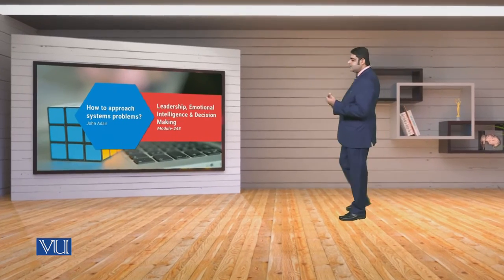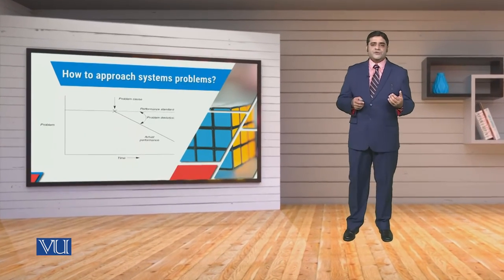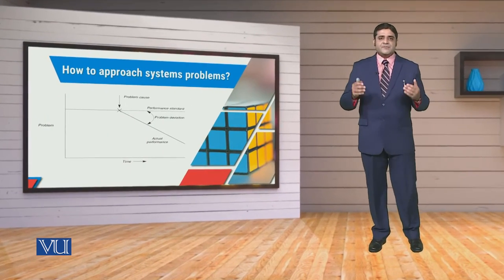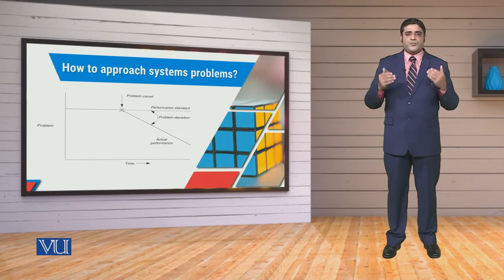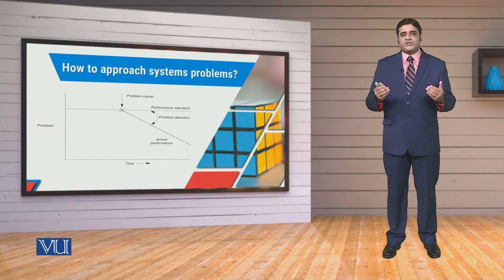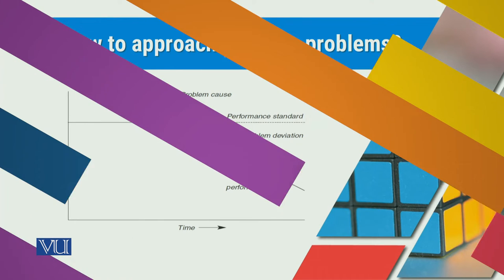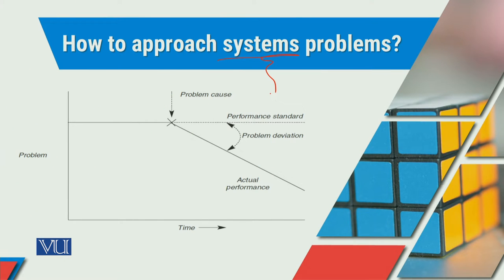Us co-relation ko understand kerne ke liye humare liye bhot zururi hai ke hum system ke saath associated joh performance expectations hain unko understand karayin. Ab ek system ko understand kerne ke liye there are two things that we have to focus upon: first of all the definition of the problem, and then the time which is required to execute and take our decisions.